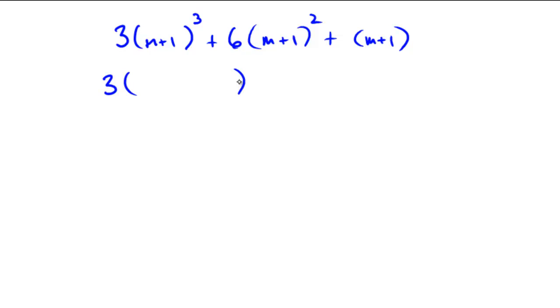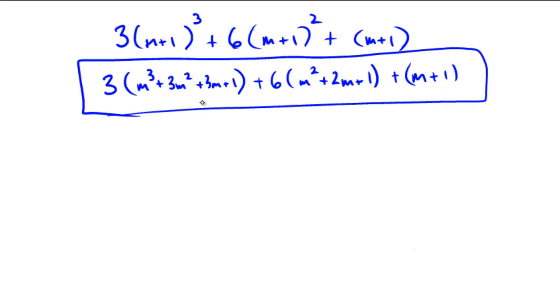So here we get 3 and m plus 1 cubed would be m cubed plus 3m squared plus 3m plus 1. And then this quantity here would be 6 times m squared plus 2m plus 1. And then on the end, it's m plus 1. Remember this truth—this is just using the binomial theorem or regular distribution. We're going to use that fact as we go through our proof by mathematical induction.